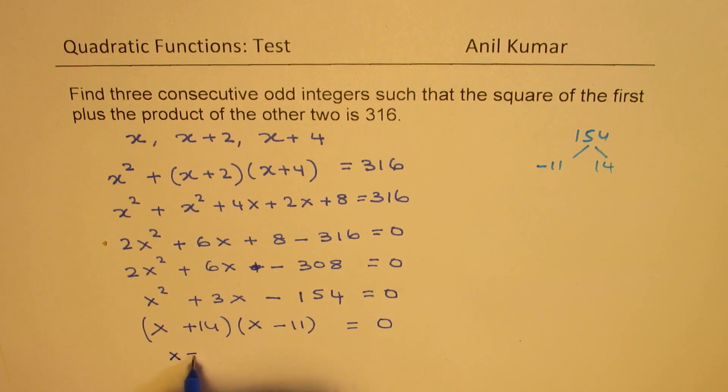So that gives us two solutions: x equals to minus 14 and x equals to plus 11. So these are the two solutions which we get.